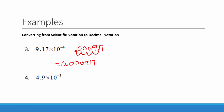Our next example also has a negative exponent on the power of 10. Multiplying by 10 to the negative 5th will give us a smaller number, so we need to move the decimal place to the left 5 places. We count 1, 2, 3, 4, 5 and put in zeros to hold our places, so we get 0.000049.